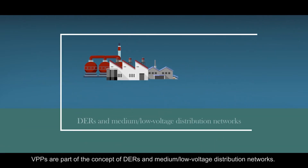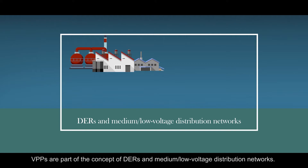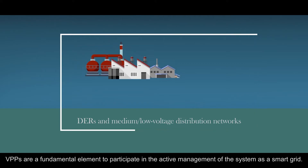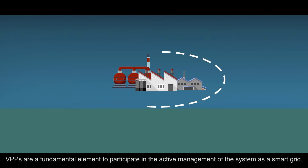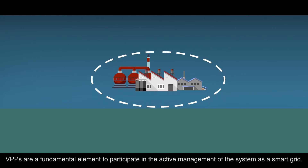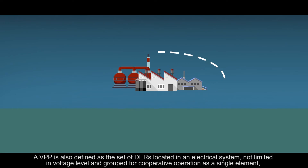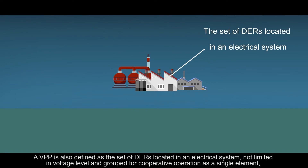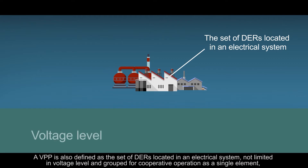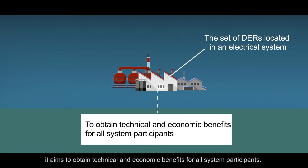Virtual power plants are part of the concept of distributed energy resources and medium/low-voltage distribution networks. Virtual power plants are a fundamental element to participate in the active management of the system as a smart grid. A virtual power plant is also defined as the set of distributed energy resources located in an electrical system, not limited in voltage level and grouped for cooperative operation as a single element. It aims to obtain technical and economic benefits for all system participants.